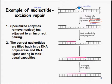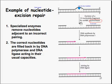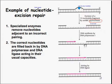In nucleotide excision repair, specialized enzymes remove the nucleotide adjacent to an incorrect pairing. The correct nucleotides are filled back in by DNA polymerase and DNA ligase acting in their usual capacities. The excision of the 12 nucleotides is carried out by UVR-ABC exinuclease, which cuts out the affected section. DNA synthesis then continues by DNA polymerase 1, and the strand is joined back together by DNA ligase, just as in normal DNA replication.